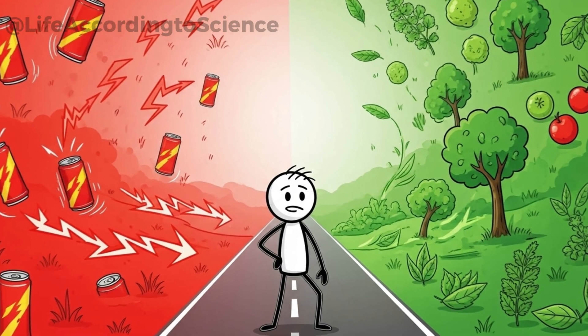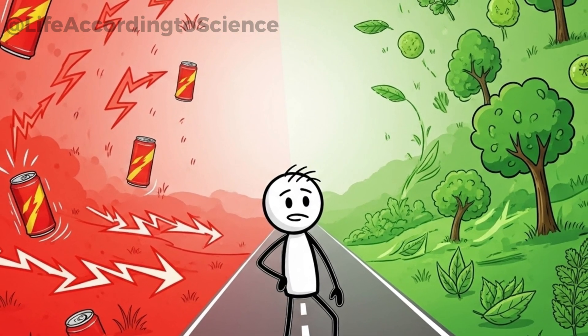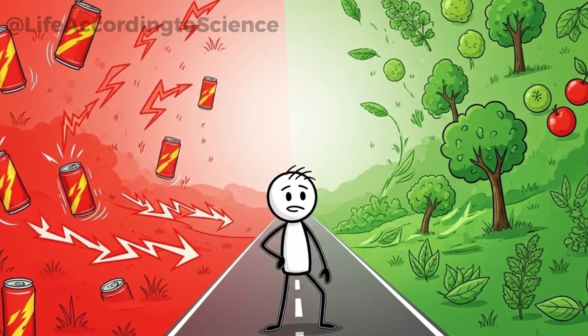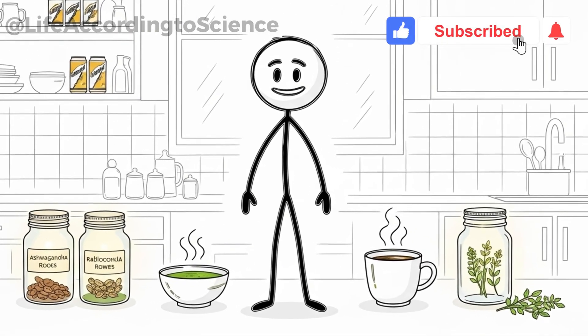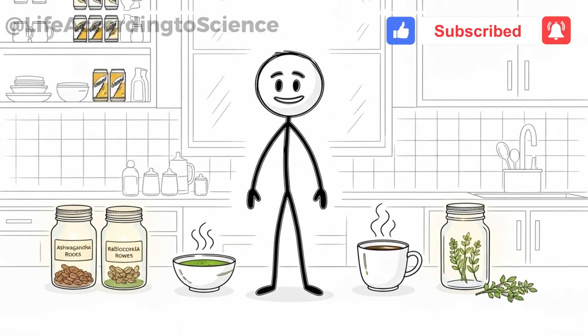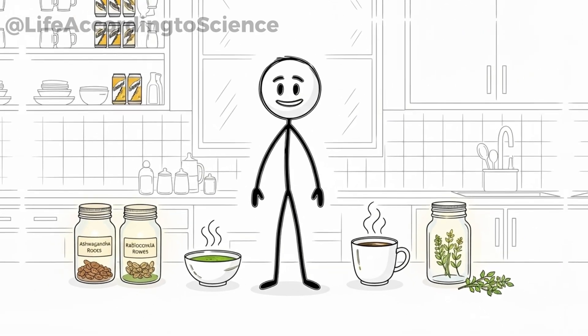What if you still crave that energy boost but want to avoid the downsides? Nature has its own set of energizers that don't carry the same risks. Options like green tea, matcha, black coffee, and even adaptogenic herbs like ashwagandha or rhodiola can give you sustained energy without the extreme highs and lows.